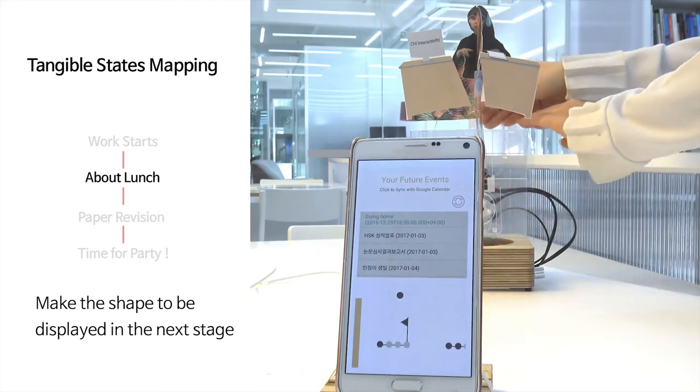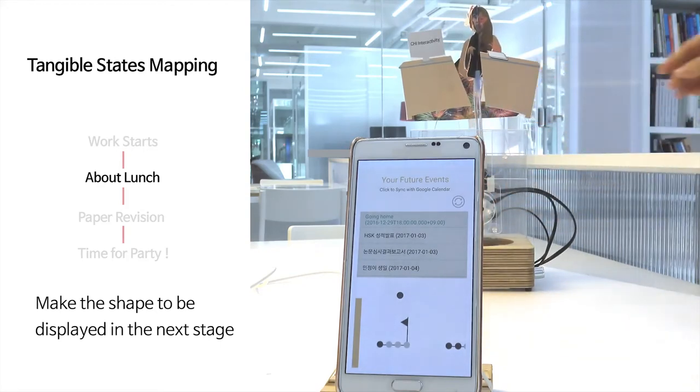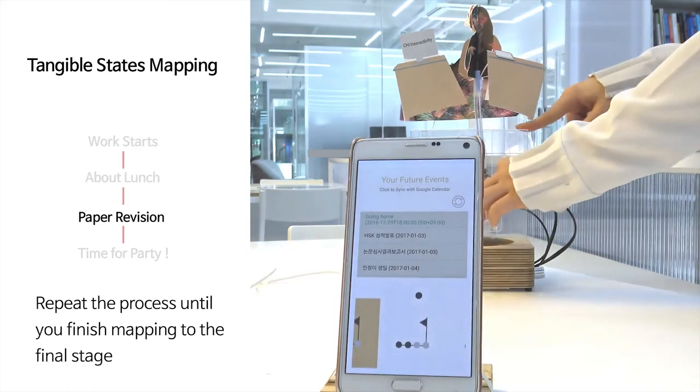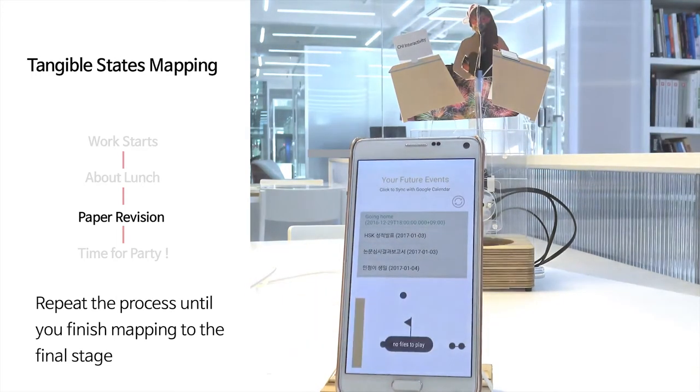Next, set up the shape to be displayed for the following data state. Repeat the process until you finish mapping the shapes for all of the data states.